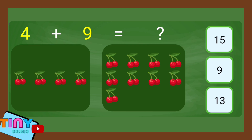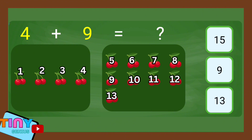4 plus 9 equal. 1, 2, 3, 4, 5, 6, 7, 8, 9, 10, 11, 12, 13.